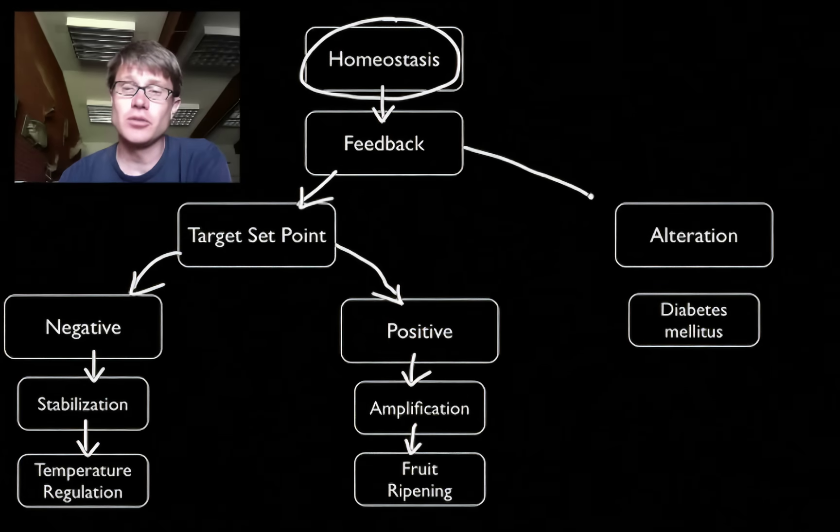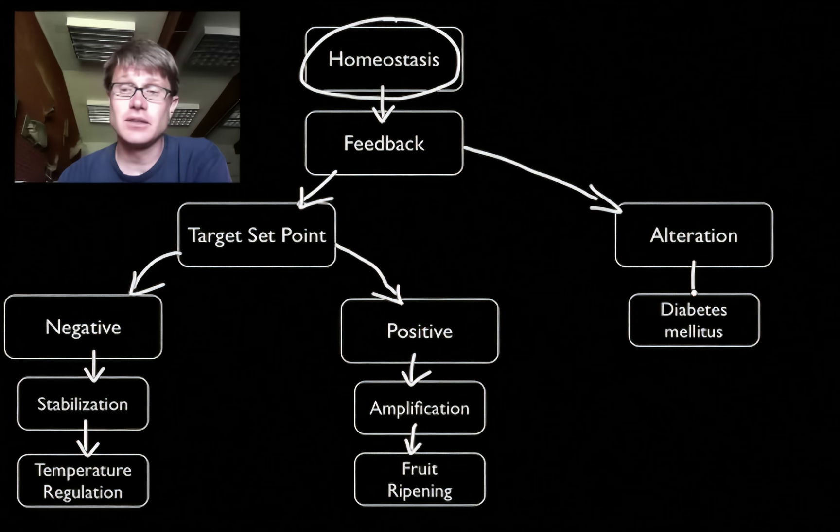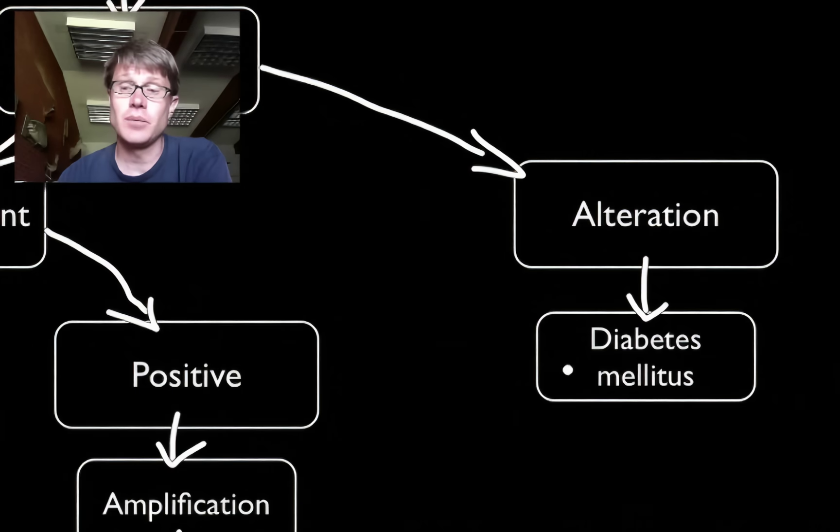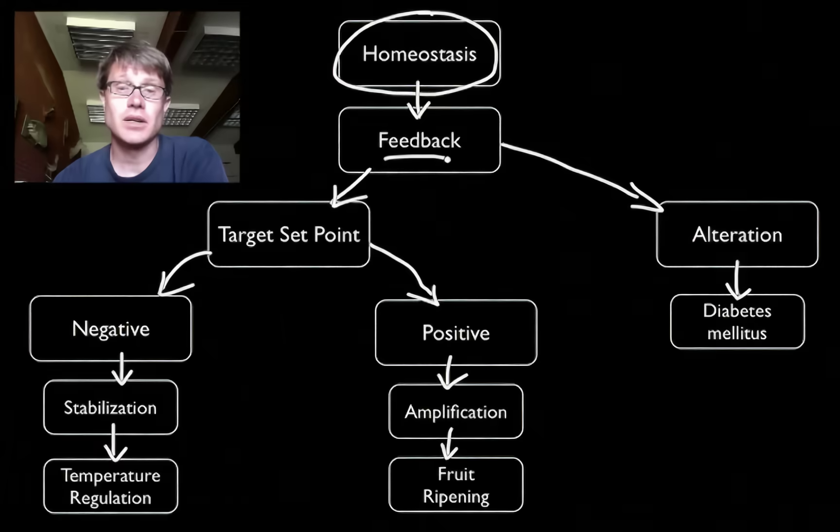With a feedback loop you can always have mistakes. You can always have alterations in that feedback loop, and that can lead to tragedy. Example would be diabetes is a problem in creating insulin or sensing that insulin. So that's just a problem in a feedback loop and it can lead to really bad things.